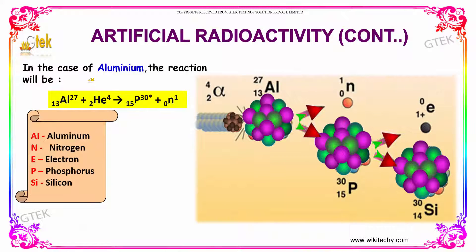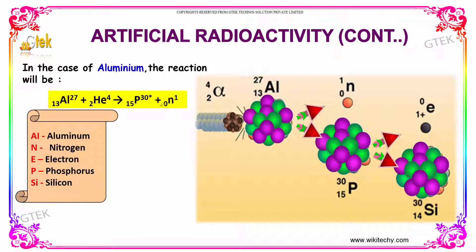In the case of aluminum, the reaction will be: aluminum reacts with helium to form phosphorus, which is really unstable, and a neutron is emitted.